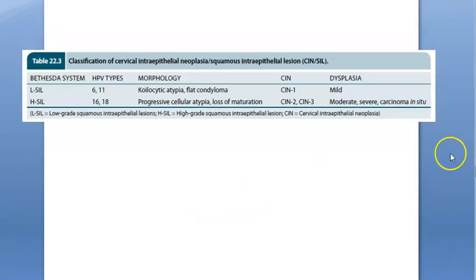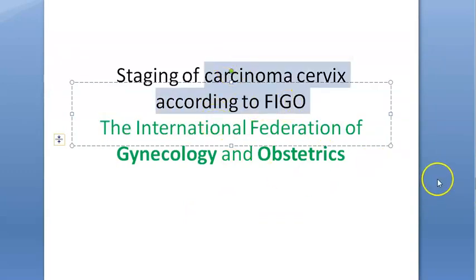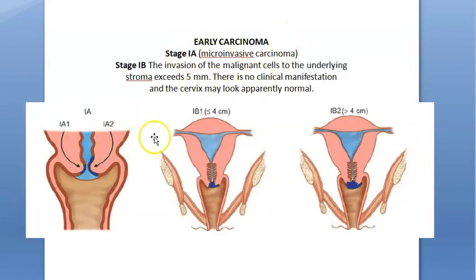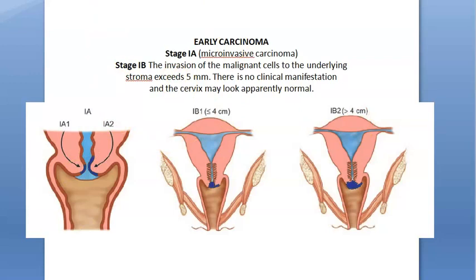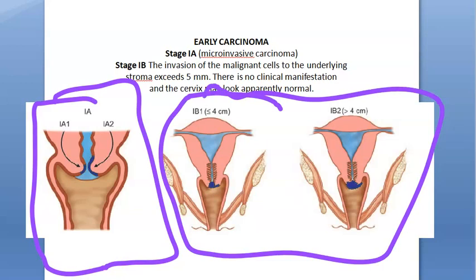Now let us look at the FIGO classification of cervical cancer. We start with Stage 1, which has 1a and 1b; 1b has 1b1 and 1b2. All of Stage 1 is early carcinoma confined to the cervix. Stage 1a is micro-invasive. Stage 1b1 is confined to the cervix with tumor less than 4 centimeters, and 1b2 is beyond 4 centimeters but still confined within the cervix.